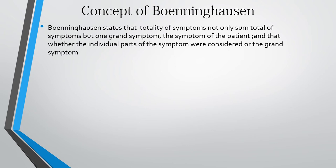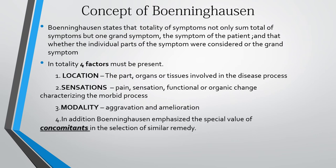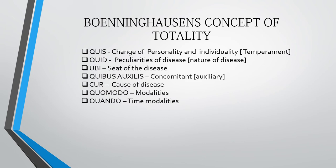Boenninghausen states that the totality of symptoms is not only the sum total of symptoms but one grand symptom — the symptom of the patient. Four factors must be present: location, sensations, modality, and concomitants. Location refers to the parts, organs, or tissues involved in the disease process. Sensations include pain, functional or organic changes characterizing the morbid process. Modality covers aggravation and amelioration. Boenninghausen also emphasized the special value of concomitants in selecting the similar remedy — the concomitant symptom is the differentiating factor.